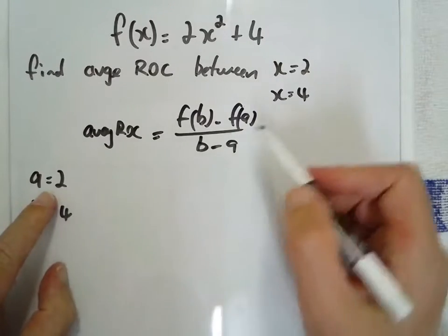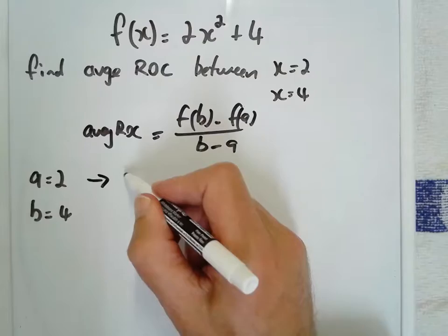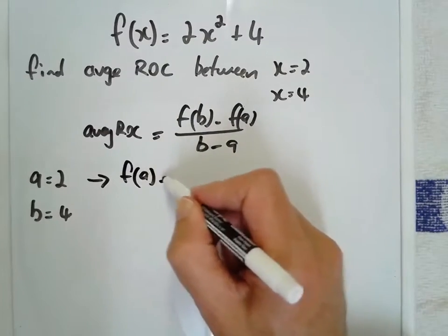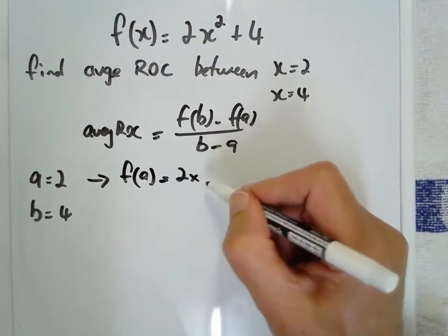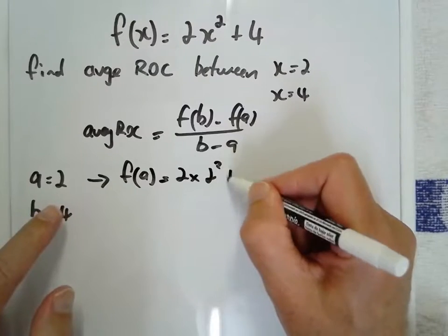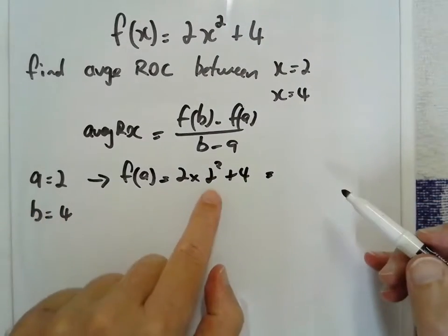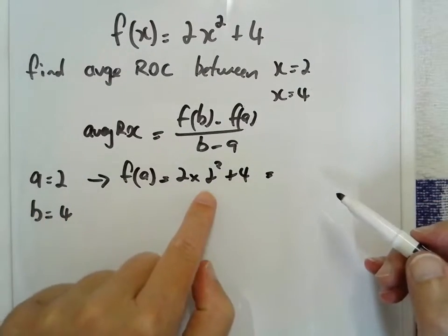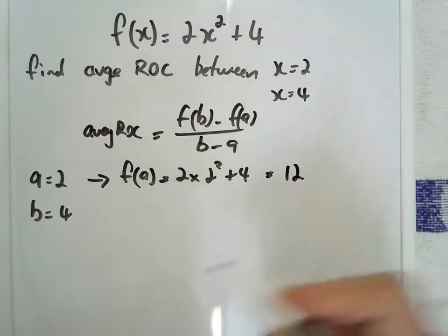So when A is 2, f of a is 2 times 2 squared plus 4. 2 squared is 4, 2 times 4 is 8, plus 4 is 12.